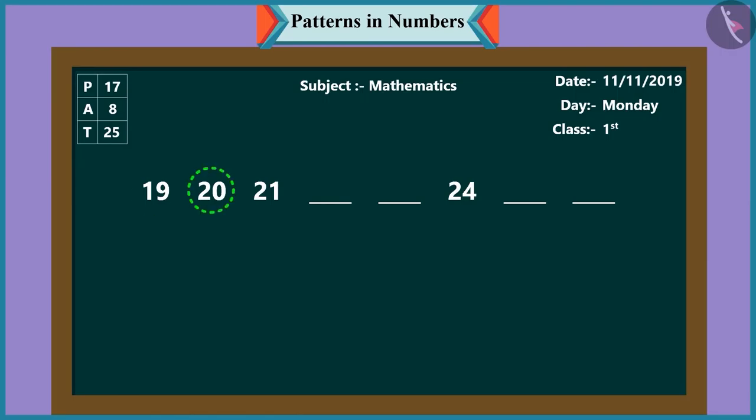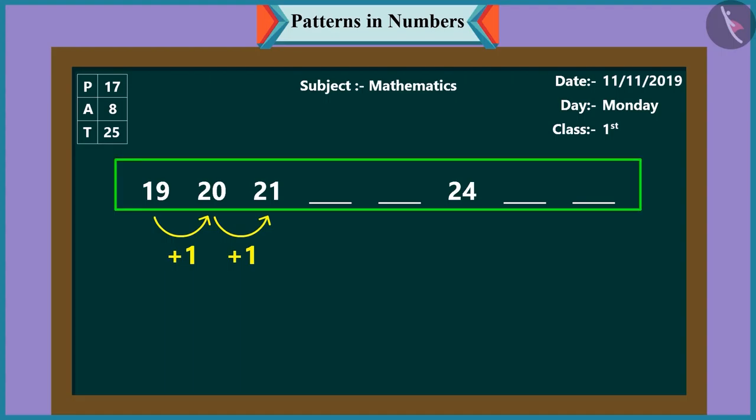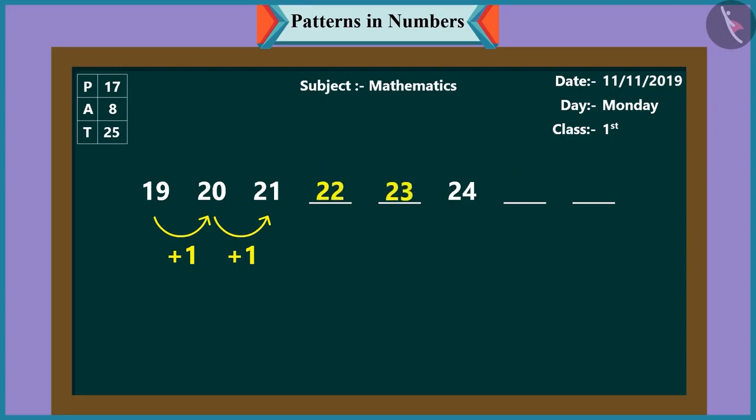Rightly said. Now look, another pattern of numbers. Come, let us understand this one. In this pattern, it is nineteen, then twenty, then twenty-one. This means that each time the numbers are increasing by one. Yes.